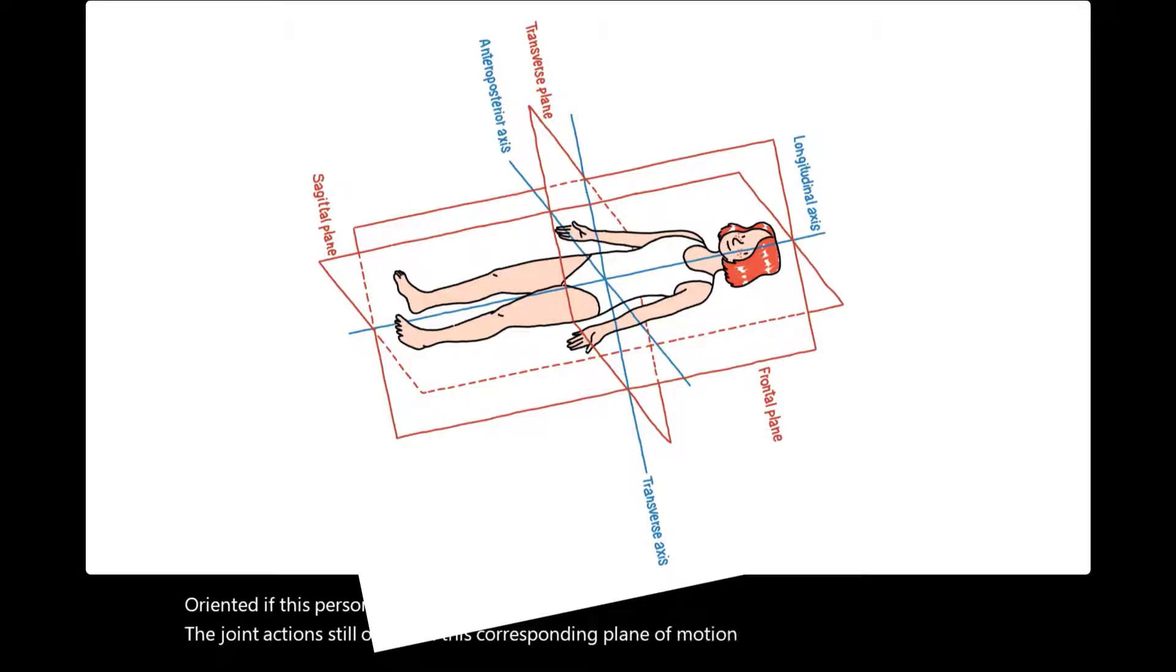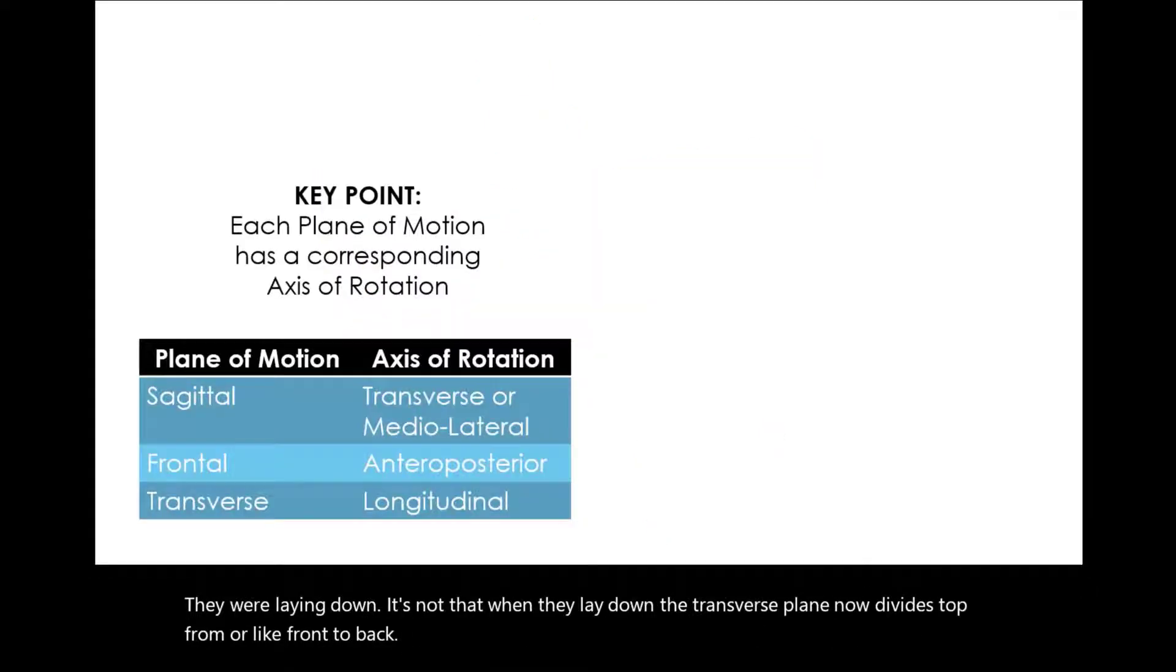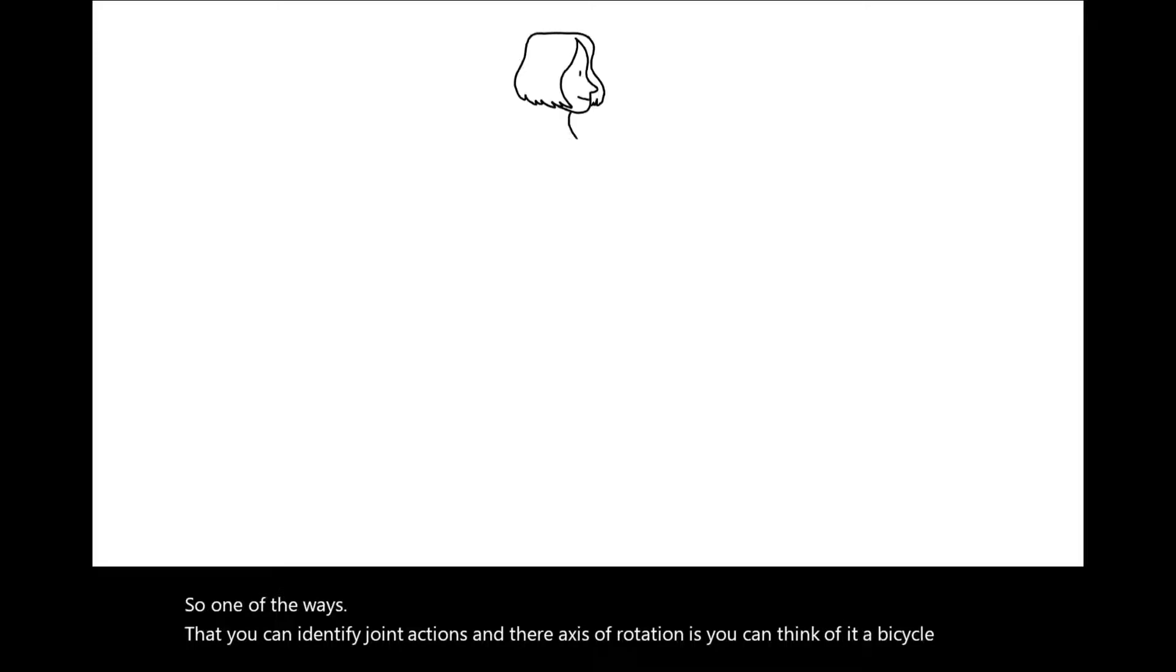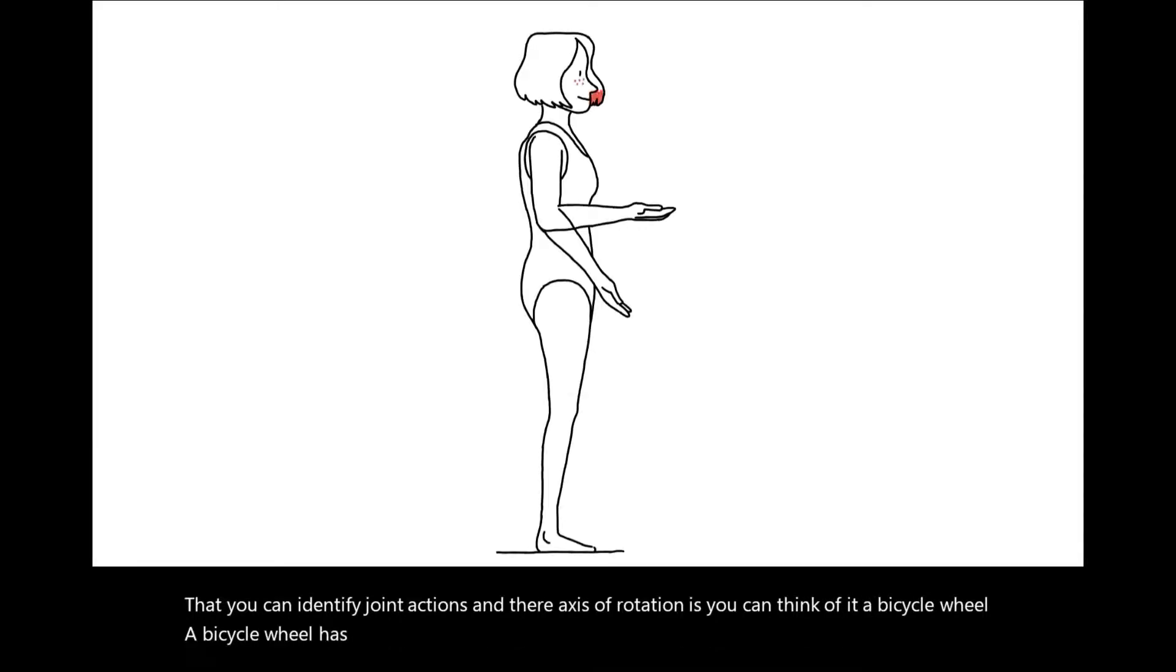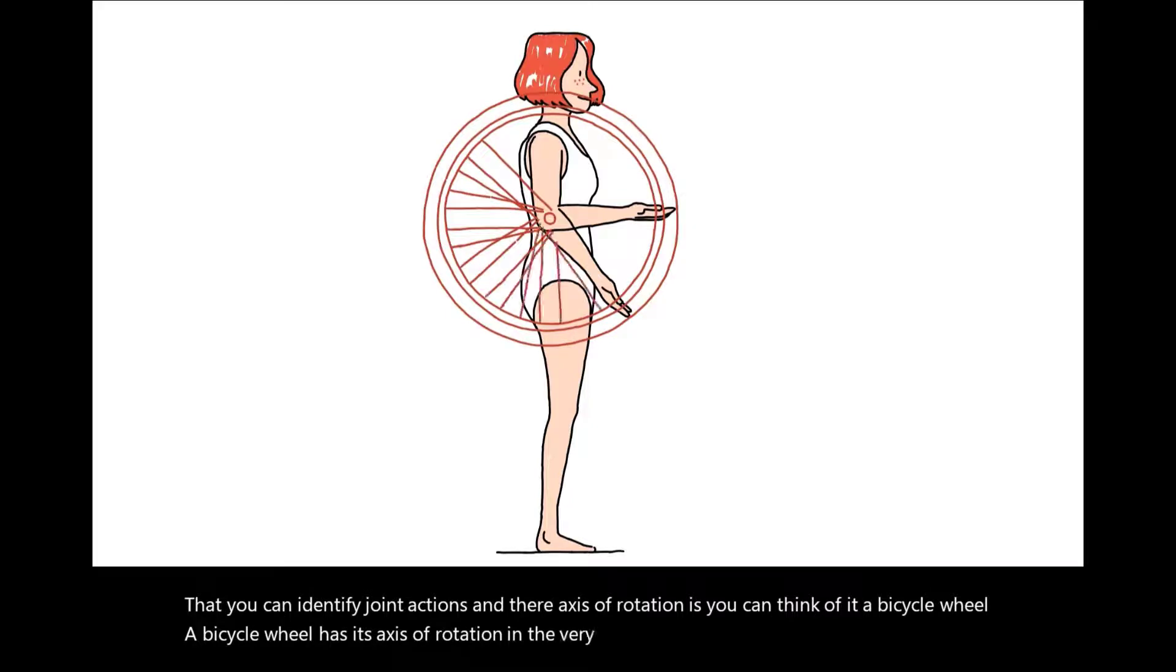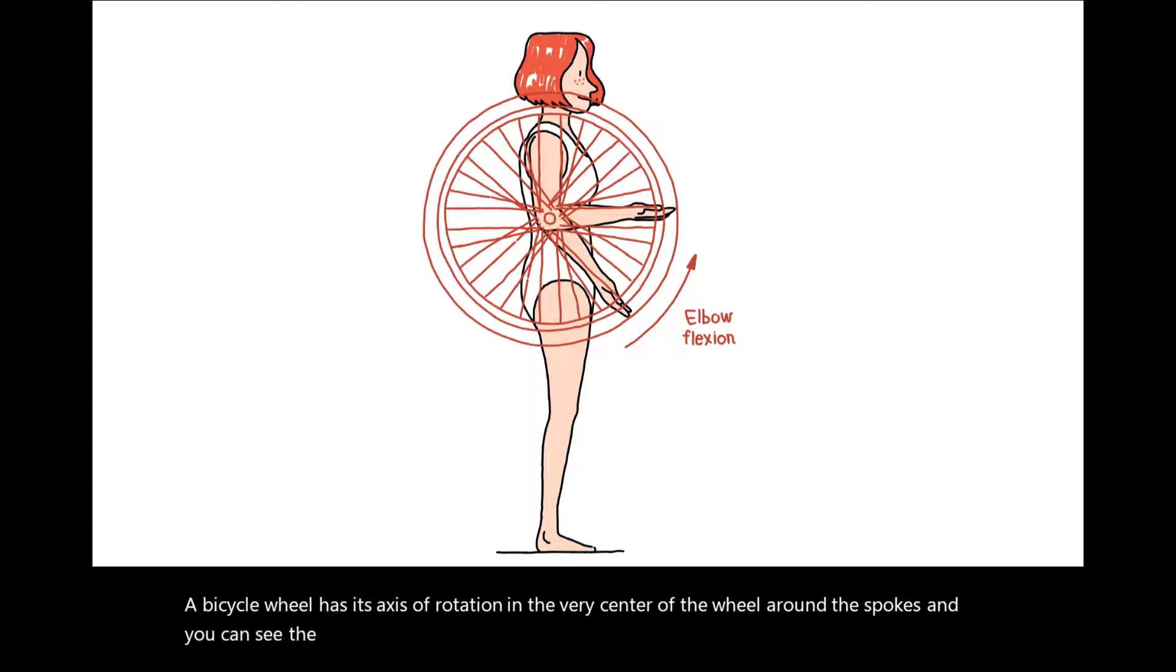One of the ways that you can identify joint actions and their axis of rotation is you can think of it like a bicycle wheel. A bicycle wheel has its axis of rotation in the very center of the wheel around the spokes. You can see the spokes rotate around that axis. If you were to overlay a bicycle wheel over the joint action that you're seeing, the wheel is what rotates, the axis is the point at which it rotates around.